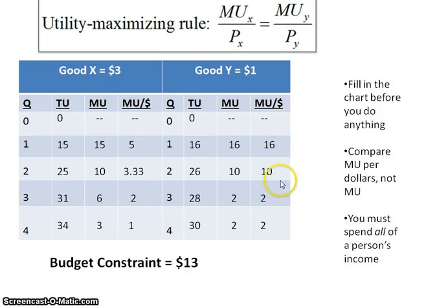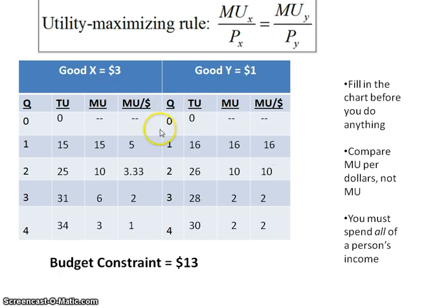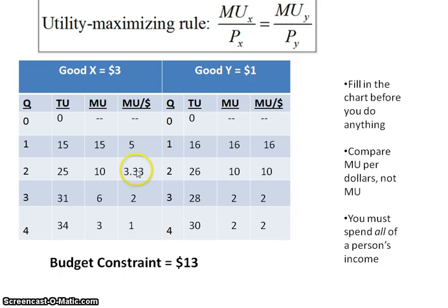Over here we have the marginal utilities for good Y and the marginal utility per dollar. The first thing to do is look at the formula for marginal utility per dollar to figure out which ratios equal one another. I like to look at the highest marginal utility per dollar and see if anything matches. The highest is 16 — nothing matches. Next is 10 — nothing matches. Then 5 — nothing. Then $3.33 — nothing in good Y matches. The next highest is $2, and that marginal utility per dollar works for either 3 or 4 units of good Y.